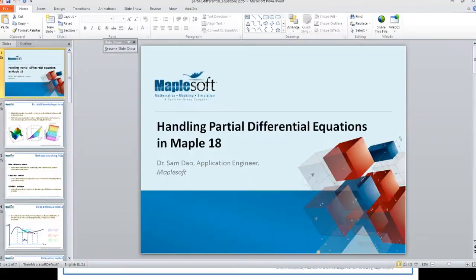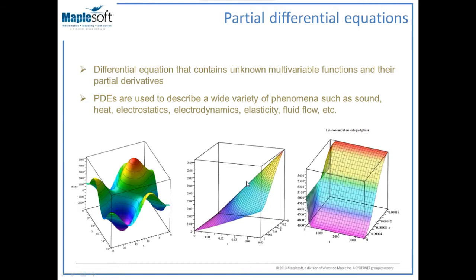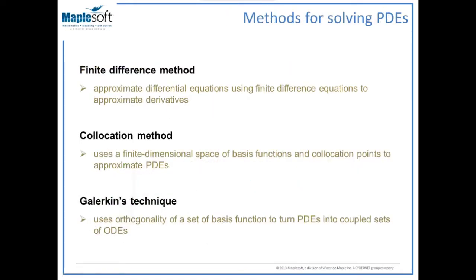Today I'm going to talk about three different techniques for solving partial differential equations. The first method is called the finite difference method — a very popular method for solving PDEs that is very easy to use. However, the problem with the finite difference method is that it results in a lot of ODEs, and because of the size of those ODEs the solution is very slow. The next two techniques are the collocation method and Galerkin's technique, which are approximation methods for solving PDEs.